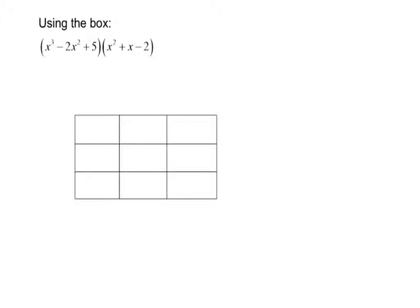We can use our area model for multiplication. I have a 3 by 3 box because I have 3 terms in each of my polynomials. So across the top I have x to the 3rd minus 2x squared plus 5, and on the side I have x squared plus x minus 2. Starting to fill in the terms: x squared times x to the 3rd is x to the 5th power, x squared times negative 2x squared is negative 2x to the 4th, and 5 times x squared is 5x squared.